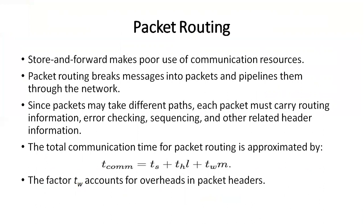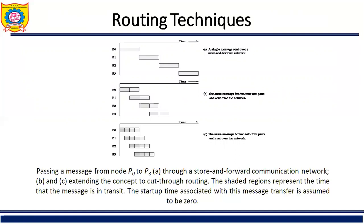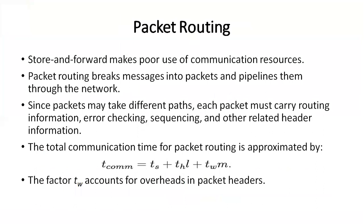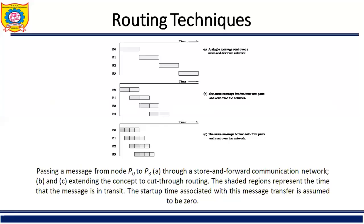Packet routing addresses the poor use of communication resources in store-and-forward. In store-and-forward, the entire message is stored in a processor and forwarded only after it is completely received by the next processor. Packet routing instead breaks the message into packets and pipelines them through the network. As shown in the figure, the message is broken into two parts where the shaded portion represents the time the message is in transit.